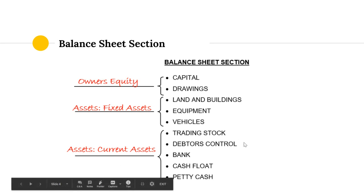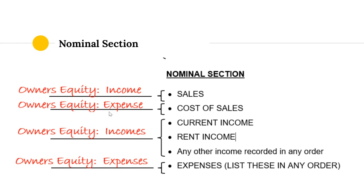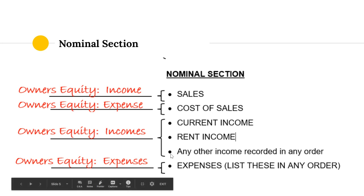We then have current assets: trading stock, debtors control, bank, cash float, and petty cash. The nominal section looks at profit — income and expenses. We start with sales, which is income, and cost of sales, which is an expense. Both are dealt with in grade nine. We then list current income and rent income as examples of income in a service business. Any other incomes and expenses are recorded afterwards.